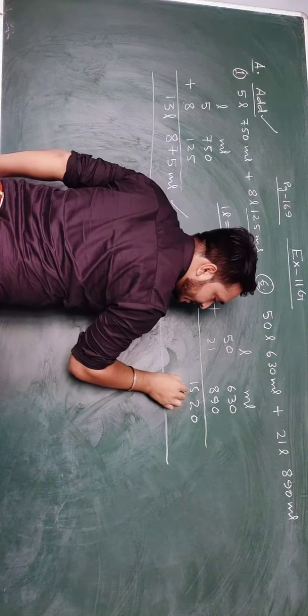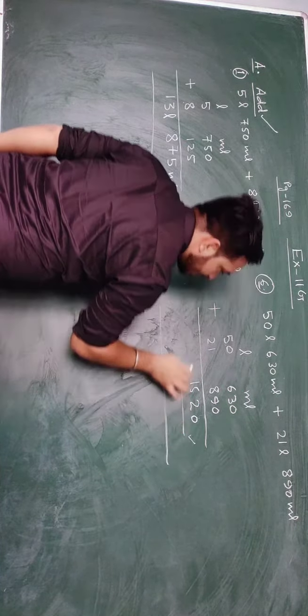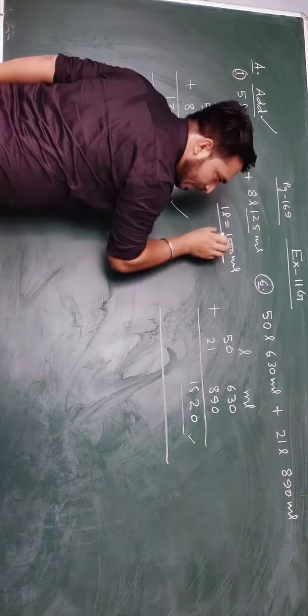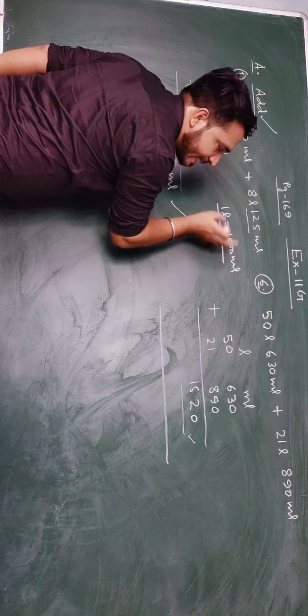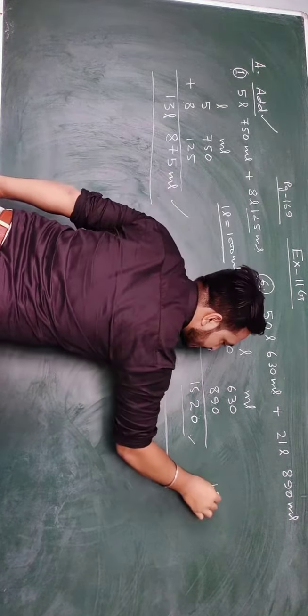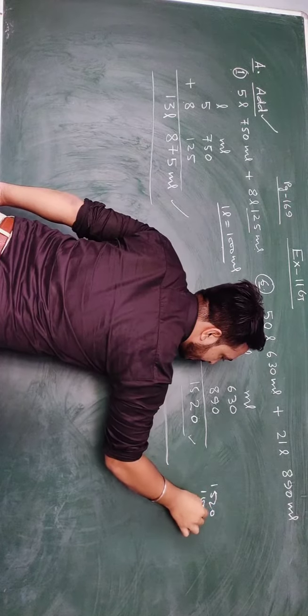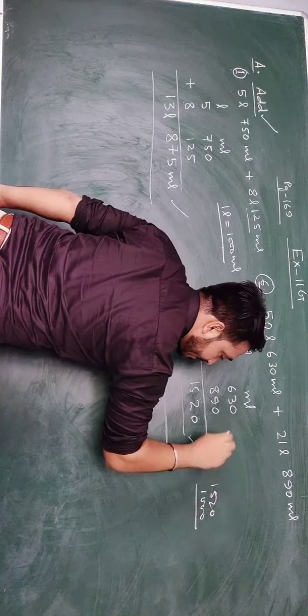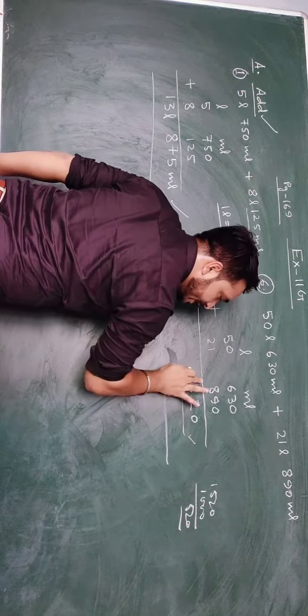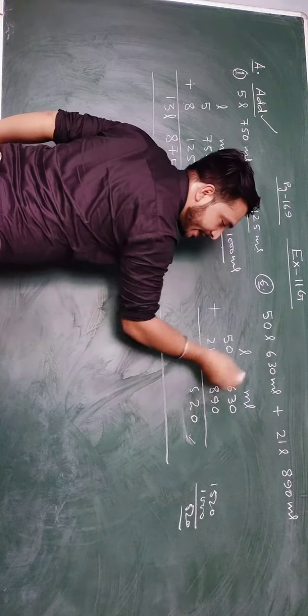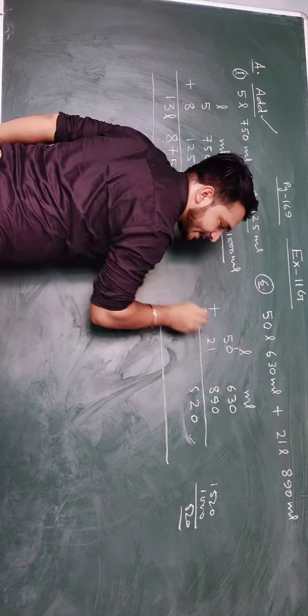So this is more than 1000. I have written in the formula, if this milliliter column is 1000 or more than that, then what will it become, it will become litre. So this, out of 1520, 1000 litre has gone, that became 1 litre, so what remained is 520. So 520, and that 1000 has become 1 litre.